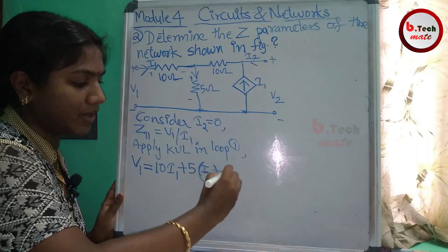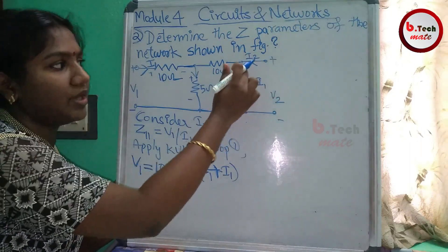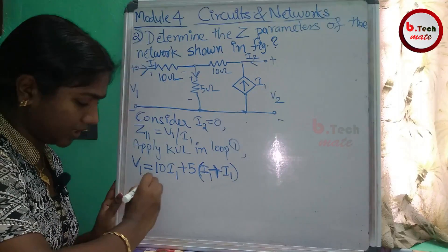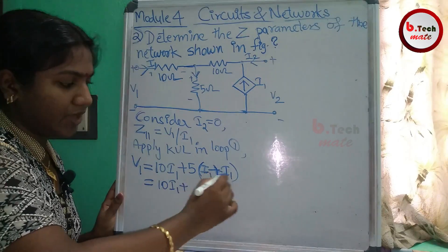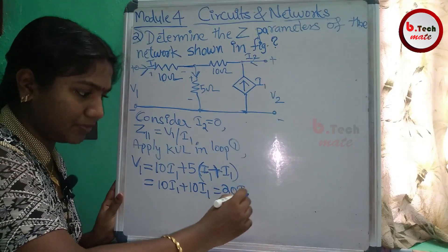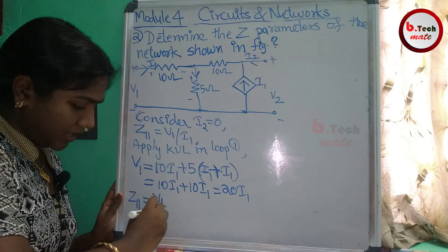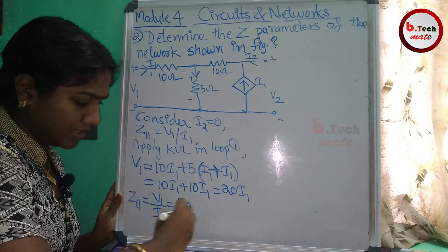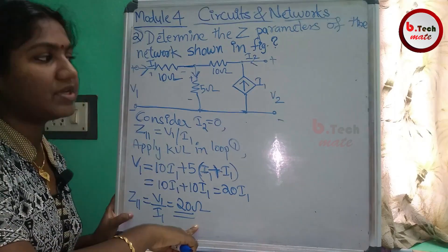The total current gives I1 plus I1 in the same direction, so 5 times I1 plus I1. The total is 10·I1 plus I1 plus I1 equals 2·I1. Therefore V1 equals 20·I1. So Z11 equals V1 divided by I1 equals 20 ohm. This gives us Z11.